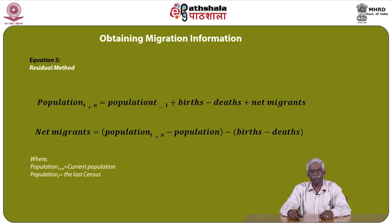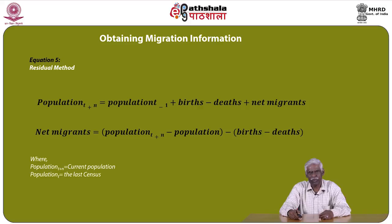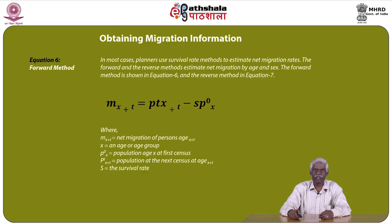The residual method equation is: P(t+n) = P(t) + births − deaths + net migrants. Therefore, net migrants = P(t+n) − P(t) − births + deaths, where P(t+n) is the current population and P(t) is the last census population. In most cases, planners use survival rate methods to estimate net migration rates.